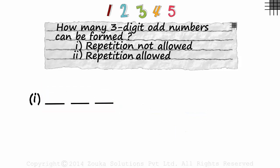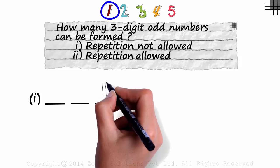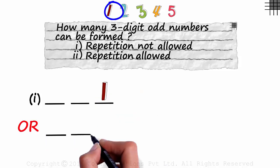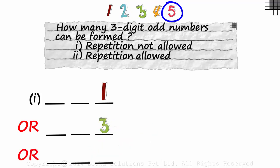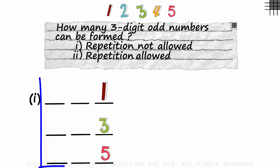So based on the condition we have, the three-digit number can end with a 1, or end with a 3, or end with a 5. These are the only three possibilities here.